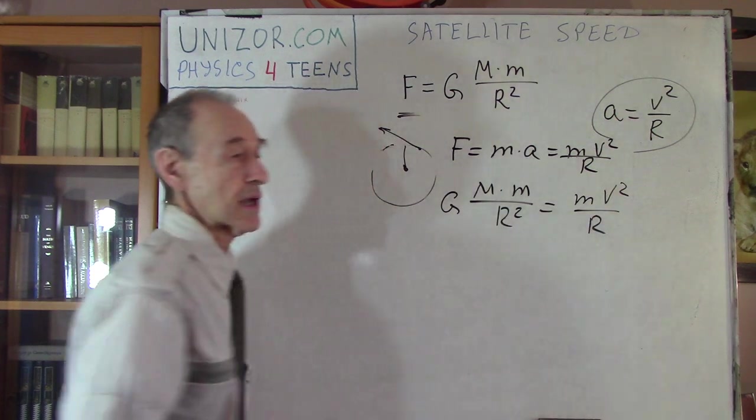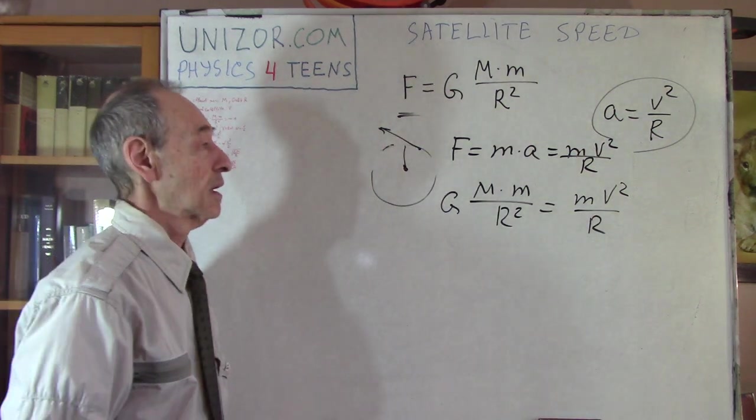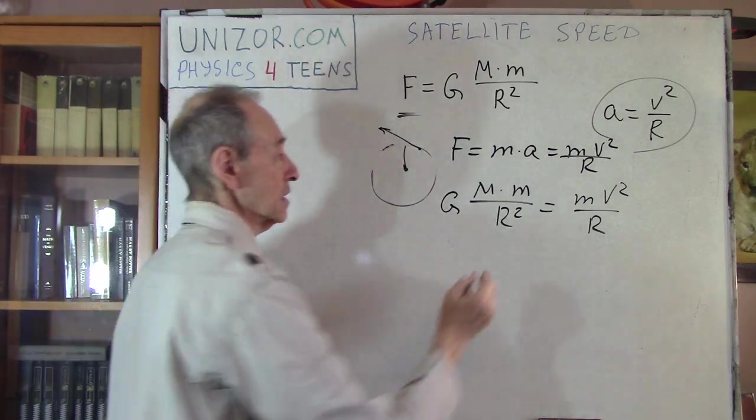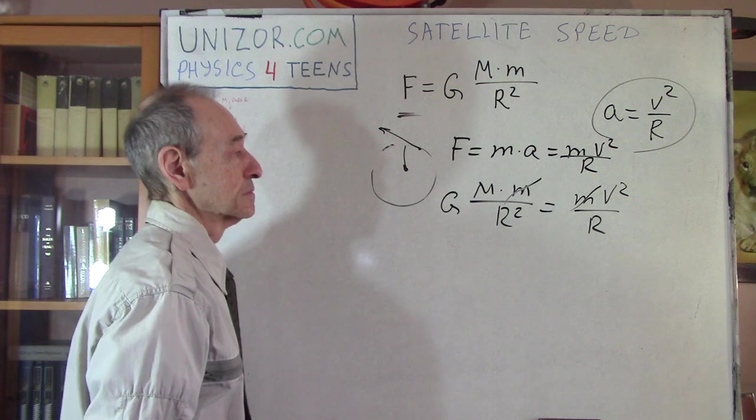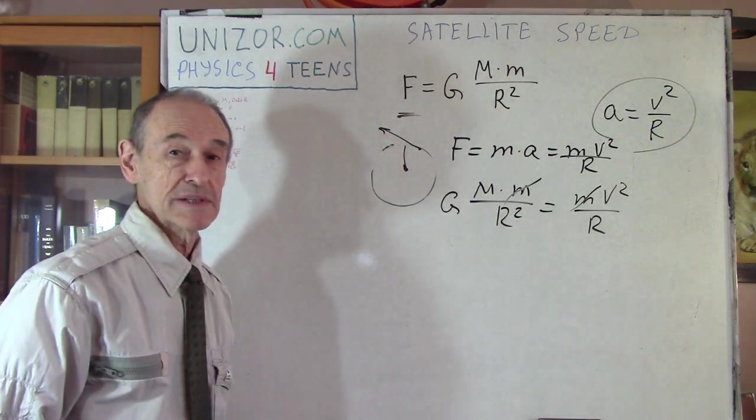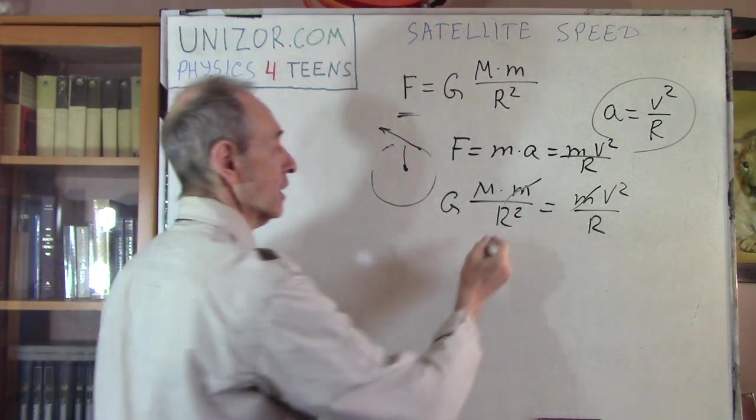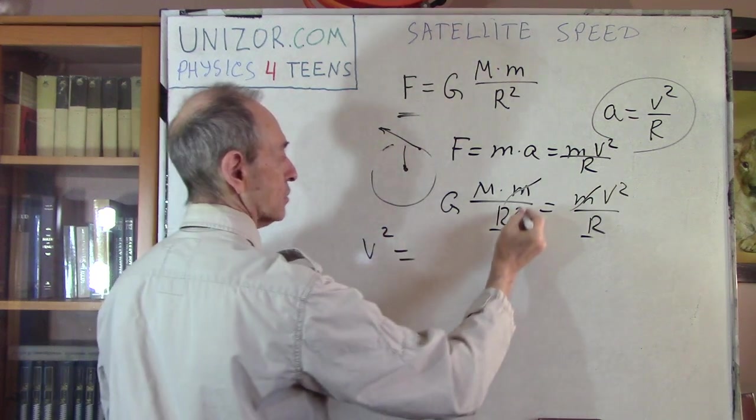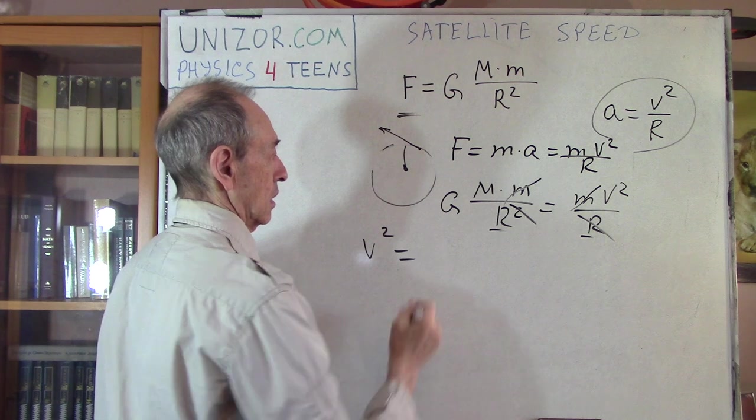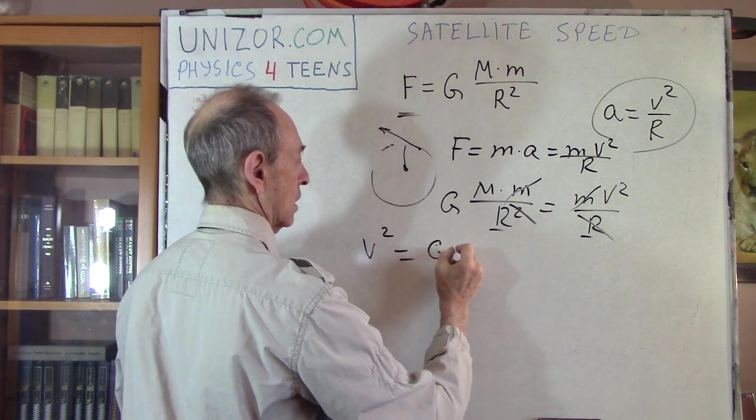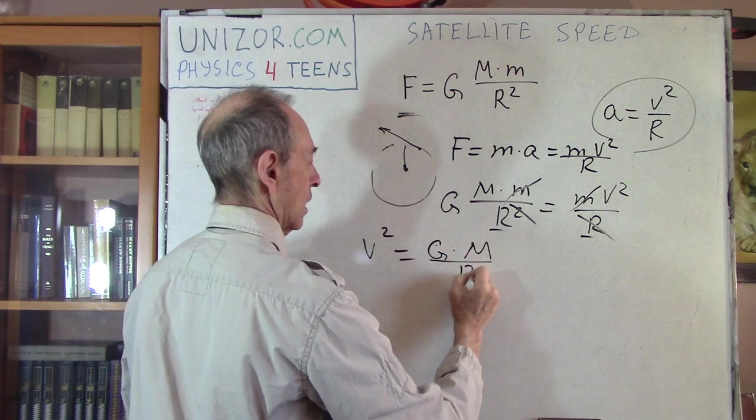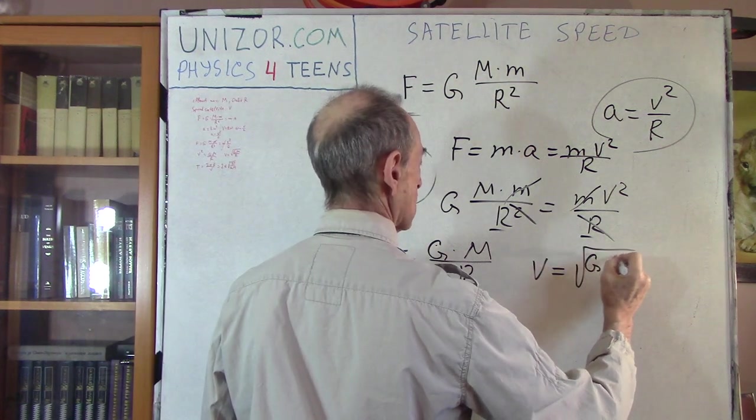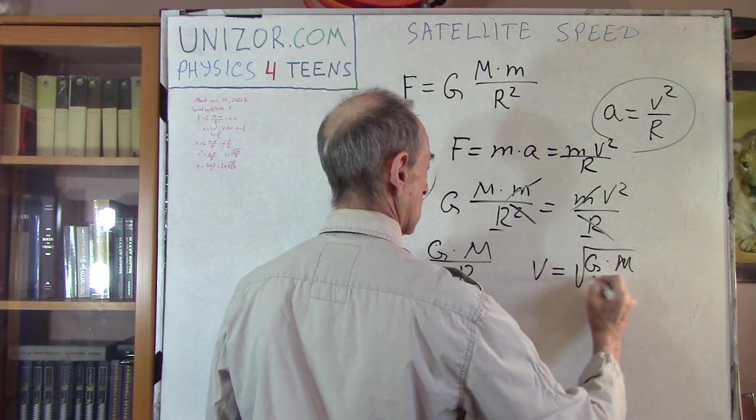And that's where we are getting the speed. Now what's absolutely amazing, at least for me, is this. So it doesn't depend on the mass of the satellite. It depends only on the radius. v squared is equal to G times M divided by r and v is equal to square root of G M divided by r.